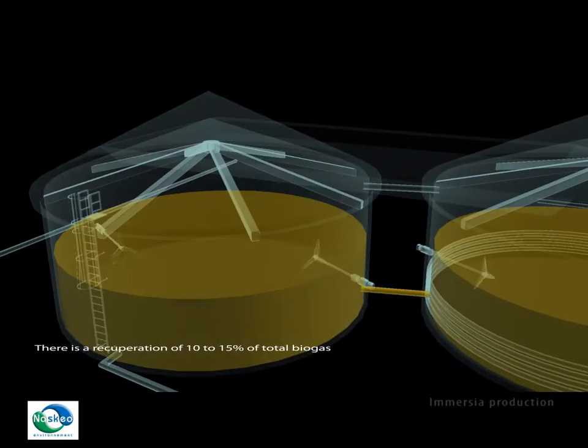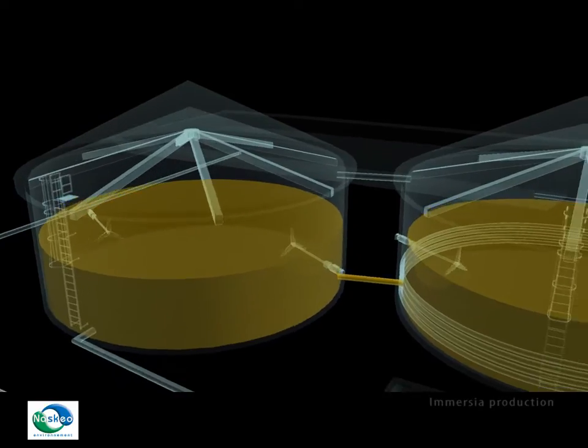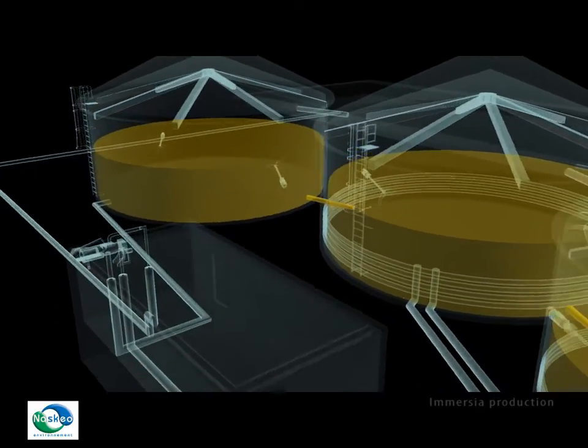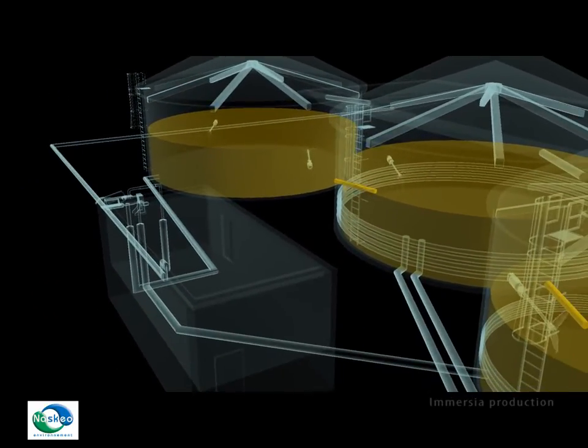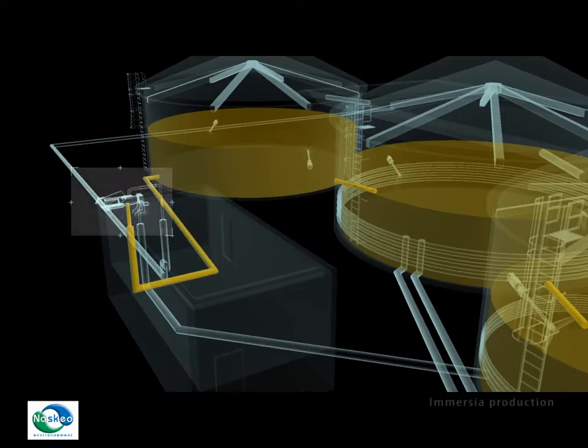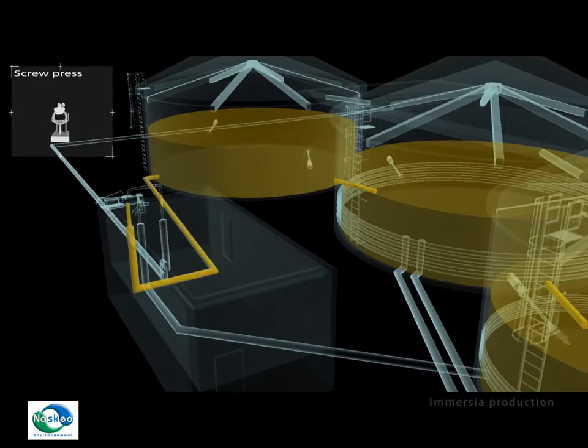The maturation stage allows a stabilization of the digested sludge for one month and anaerobic digestion stops here. After the maturation tank, digested sludge is separated through a screw press and stored. It is then used as fertilizer.